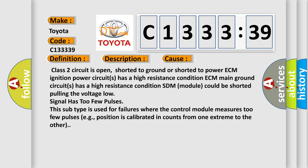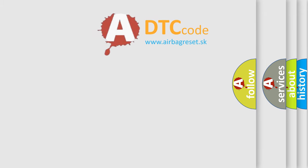This diagnostic error occurs most often in these cases: Class 2 circuit is open, shorted to ground, or shorted to power. ECM ignition power circuits has a high resistance condition. ECM main ground circuits has a high resistance condition. SDM module could be shorted, pulling the voltage low. Signal has too few pulses. This subtype is used for failures where the control module measures too few pulses, for example, position is calibrated in counts from one extreme to the other.